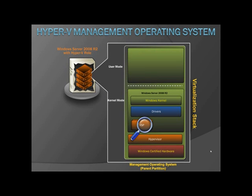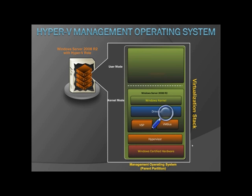Moving upwards, we've also installed what is known as the Virtualization Service Provider or VSP. The VSP essentially provides synthetic device support to virtual machines over the virtual machine bus. The virtual machine bus, or VM bus, is just a logical inter-partition communications channel — essentially the communications pipeline between partitions. It stands to reason that if we have a VSP in the parent partition, we would also have a similar synthetic device in the child partition, and we do. It's known as the Virtualization Service Client, or VSC.